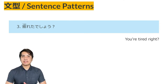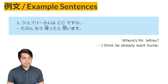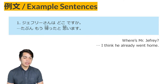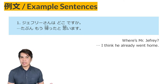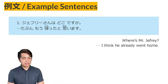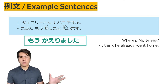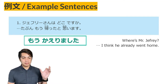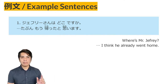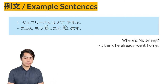Now let's see some example sentences about today's sentence patterns. Example sentence No. 1: 'Jeffrey-san wa doko desu ka?' — Where is Mr. Jeffrey? He answered 'tabun,' which in English means maybe or perhaps. So you're expressing your idea or your judgment. The plain form for the verb kaerimashita is the ta form — kaetta. So kaetta to omoimasu: I think he already went home.